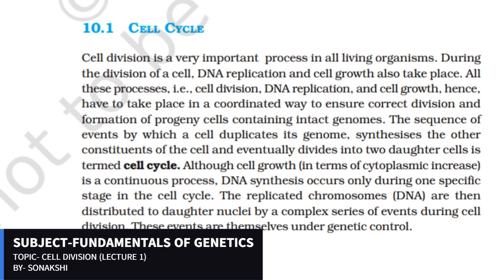All these events — DNA replication, cell growth, and the cell dividing into two daughter cells — when they occur in a sequence, we call it the cell cycle.